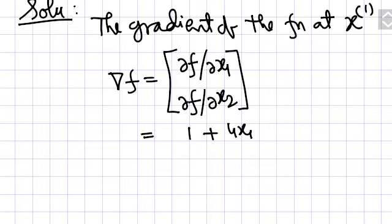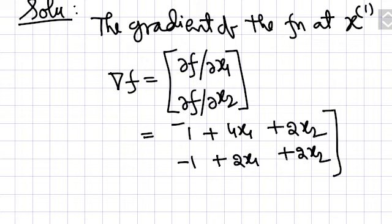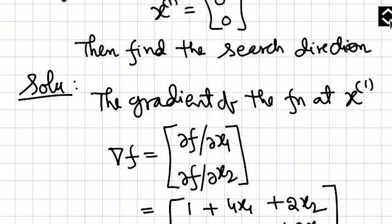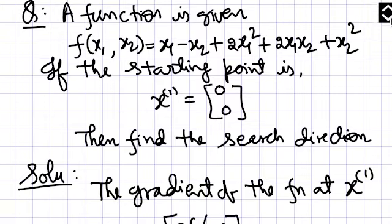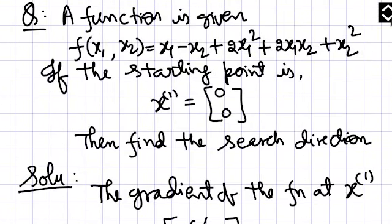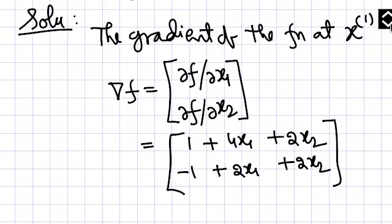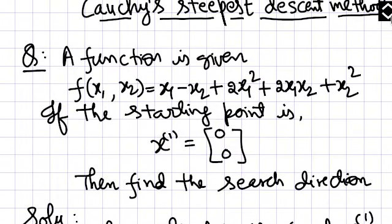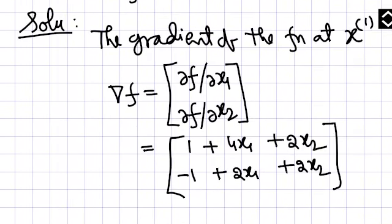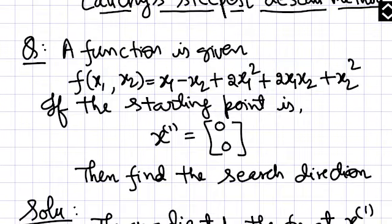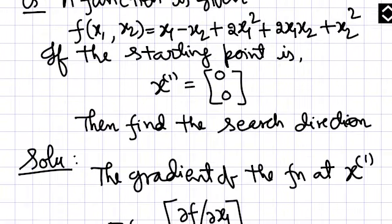4x1 plus 2x2, minus 1 plus 2x1 plus 2x2. I just want to confirm it if it is okay. 4x1 and 2x2 is coming from here and minus 1 plus 2x1, this is okay.